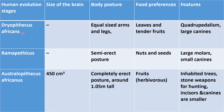The next stage was Ramapithecus. In Ramapithecus also, the size of brain is not confirmed. Body posture was semi-erect — they had a semi-erect posture and used to bend and walk like gorillas. Their food preference was nuts and seeds.